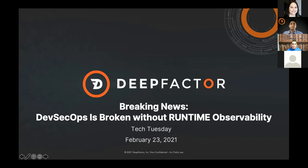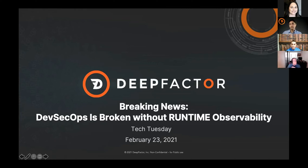Welcome again to today's webinar. We are going to be discussing why DevSecOps is broken without runtime observability. I'm Amy Fenwick, Director of Marketing, and you'll hear my voice hop in and out throughout the presentation. Just a couple of reminders: all attendees have been muted, you can submit questions by typing them in the Q&A box and we will address them at the end of the presentation. We are recording this webinar and you'll receive an email with a link to the recording. Don't forget to take our survey at the very end.